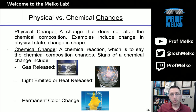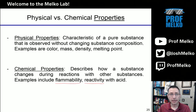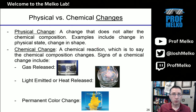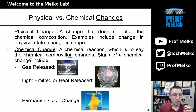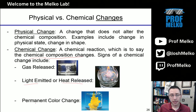Physical change does not alter the chemical composition, just like a physical property is observed without changing the composition. A chemical change changes the chemical composition. Some examples of chemical changes are: gas being released, light emitted or heat released, and a permanent color change. These are what signify that chemistry is happening.